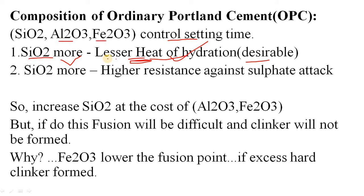If silica is more, the concrete also becomes very resistant against sulfate attack or chemical attack — very important in coastal areas. So your tendency would be to increase the silicon dioxide component. However, SiO2, alumina, and ferric oxide are fixed together — if you increase silica you have to reduce the others. This is where the role of ferric oxide in cement formation becomes very crucial.